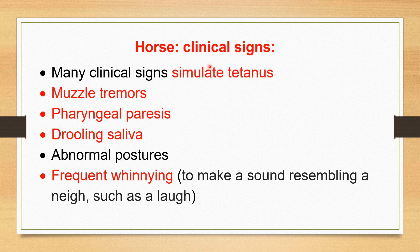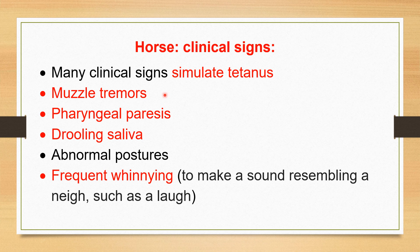Now we will see the clinical signs of rabies in horse. The clinical signs simulate those of tetanus, so the clinician has to be careful. Tetanus is a very common disease of horses, while rabies is not as common, but the symptoms of rabies simulate the symptoms of tetanus. There are tremors and spasms of the muscles, pharyngeal paralysis causing difficulty in drinking and swallowing, and drooling of saliva from the mouth.